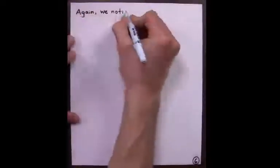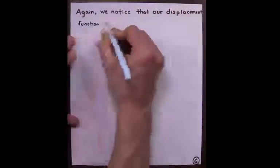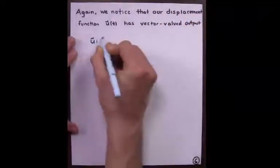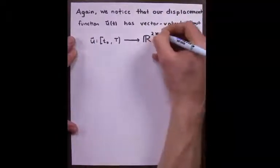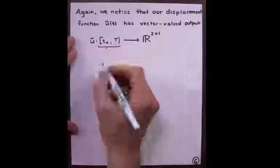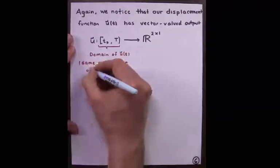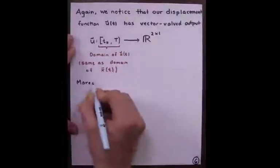Again, we notice that our displacement function u of t has vector-valued output, where u goes from t naught to capital T into R two. The domain of u of t is the same as the domain of the position vector x of t. Moreover,